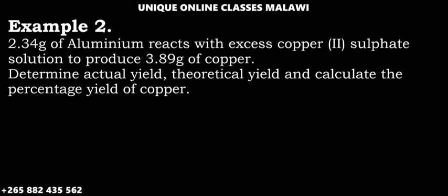It leads: 2.34 grams of aluminum react with excess copper sulfate solution to produce 3.89 grams of copper. First, we should find the actual yield, theoretical yield, and calculate the percentage yield of copper.